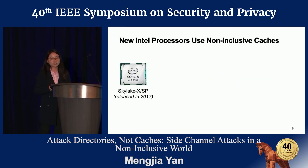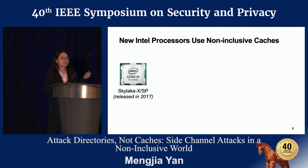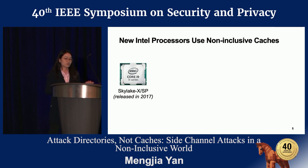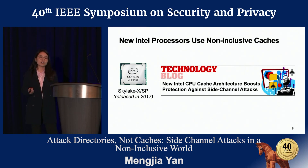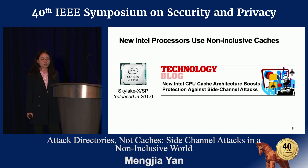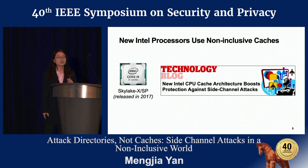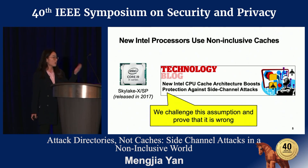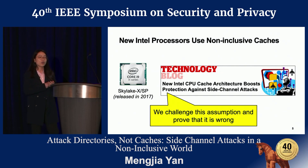But things changed in 2017. Intel released their new processor, code-named Skylake-X and Skylake-SP. This processor comes with a non-inclusive cache hierarchy. People then thought cache attacks would fail on these processors. Even now, if you search online, you can find articles with titles like 'New Intel CPU cache architecture boosts protection against side-channel attacks.' Well, this is when you need our new attack, because our attack challenged that assumption and proved it wrong. We proposed the first two conflict-based cache attacks which work on the non-inclusive cache hierarchy.